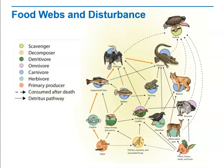Here we see detritus, bacteria, and associated fungi. What if an oil spill caused a serious decline in the number of the bacteria and fungi that break down detritus? Nutrients would be recycled more slowly, and the organisms that consume these organisms would have less food.